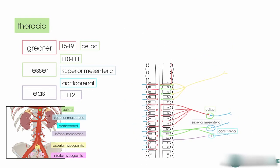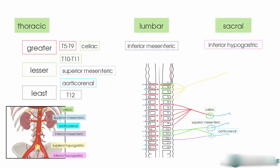In terms of the lumbar and sacral splanchnics, the lumbar projects to the inferior mesenteric ganglion and the sacral splanchnics project to the inferior hypogastric plexus.